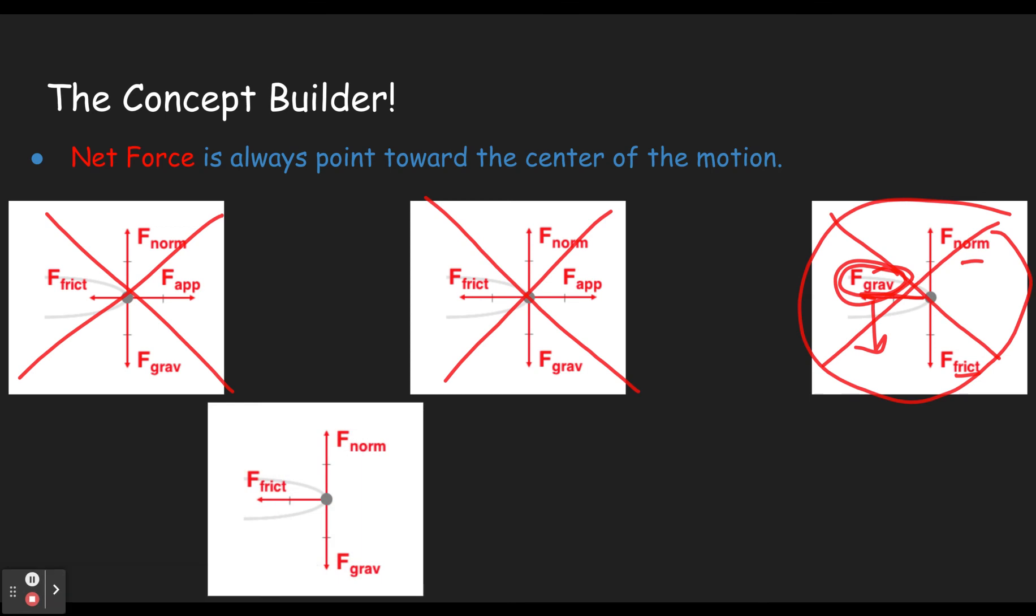Our next example here. We have friction pointing towards the center and a normal force pointing up. Those both are possible. Absolutely. And gravity's pointing down. That makes a lot of sense. So this one could be right. Then we have to read what the situation is. And so it depends on the situation.